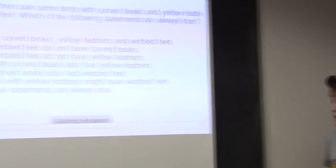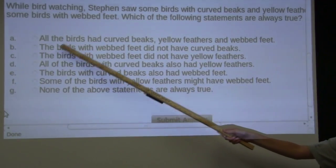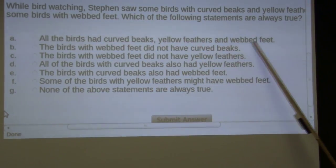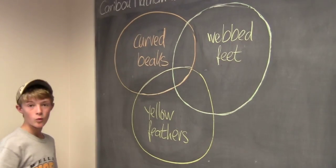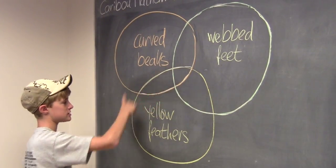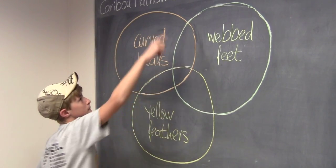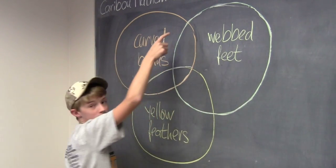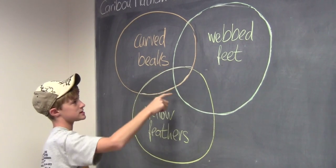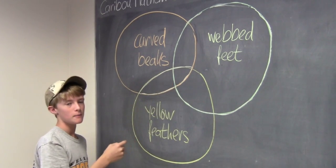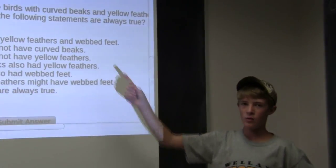So let's look at A. All the birds had curved beaks, yellow feathers, and webbed feet. That would be true if these three circles would be one in the same circle, or in this picture would only be the centerpiece. That may or may not be true, and since it's not always true, A would be false.